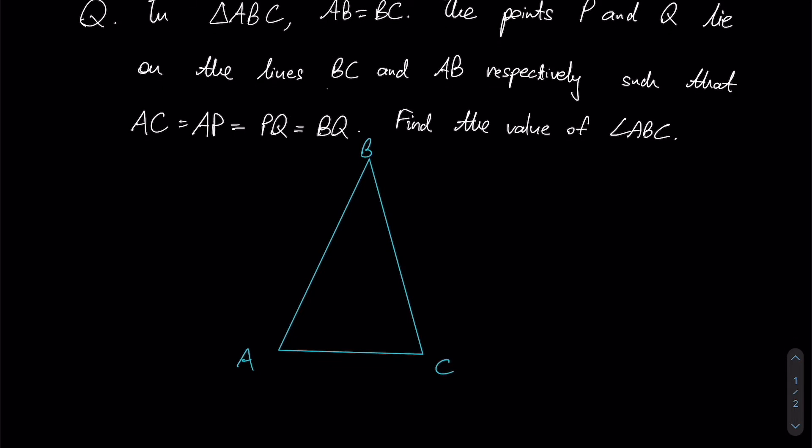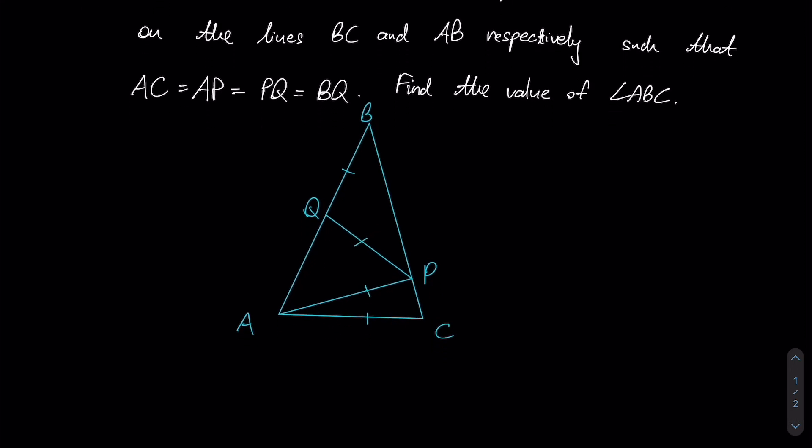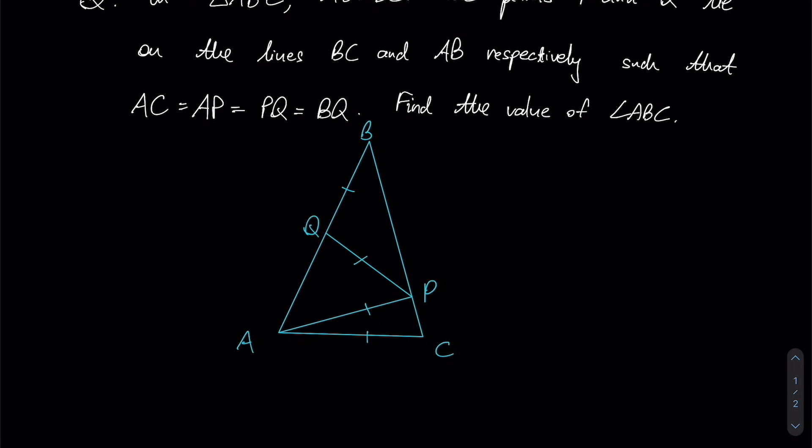Points P and Q lie on BC and AB respectively such that AC equals AP equals PQ equals BQ. So based on those instructions, we could let this point be P such that this equals this, and then PQ somewhere over here must be equal in length as well, and BQ must also be the same in length. Right now we have crafted a figure that is supposed to abide by the guidelines suggested by the question, and we are supposed to find angle ABC.